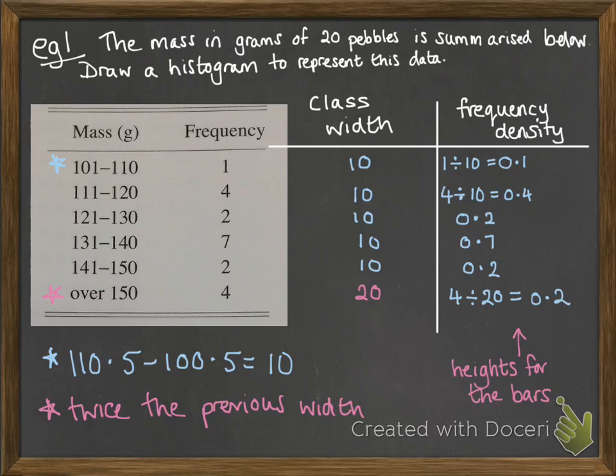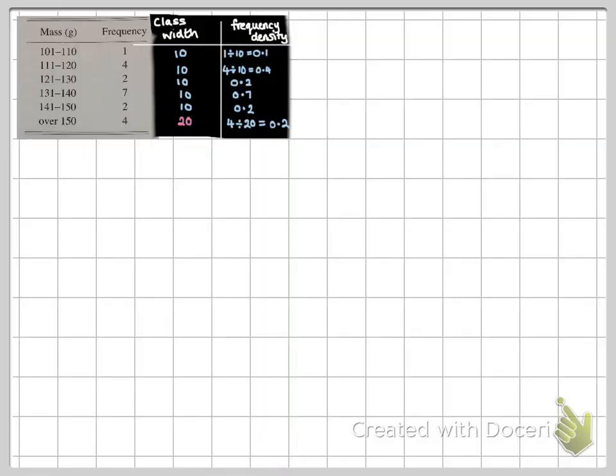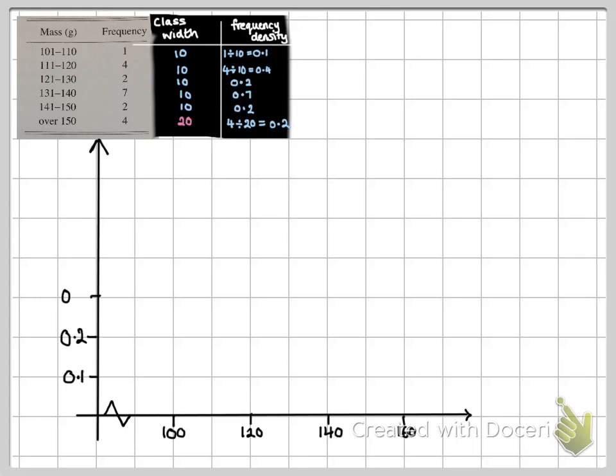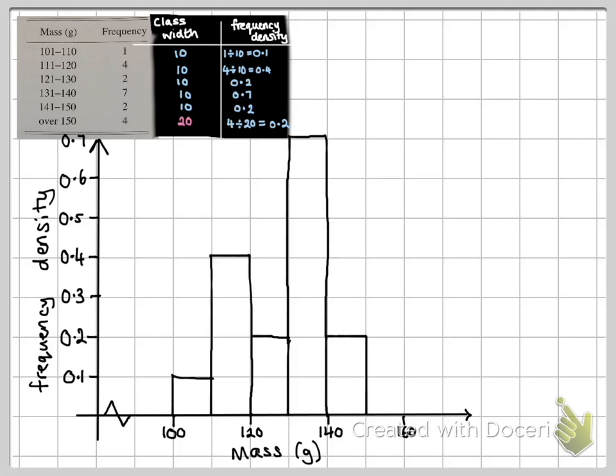Now that frequency density is what gives us the heights of the bars when we come to draw the histogram. Now I've just copied across that data to be able to draw it on this squared paper here. So we set up our axes for the mass of those pebbles and our frequency density on the y-axis. And now we're going to draw a bar with the width that we've worked out for the class width and the frequency density as the height. And this is our histogram.